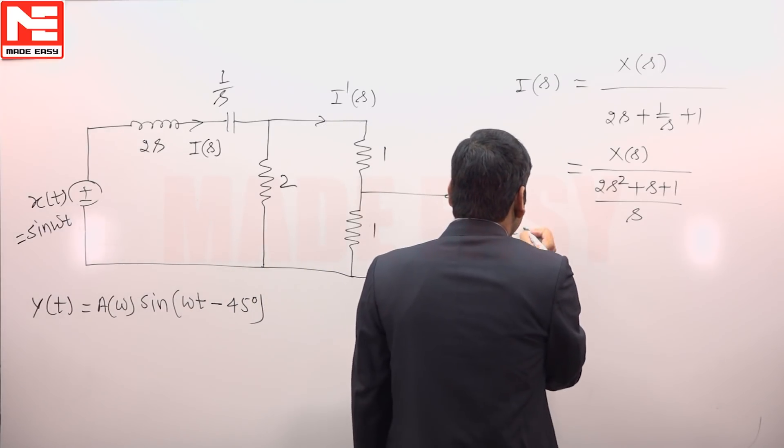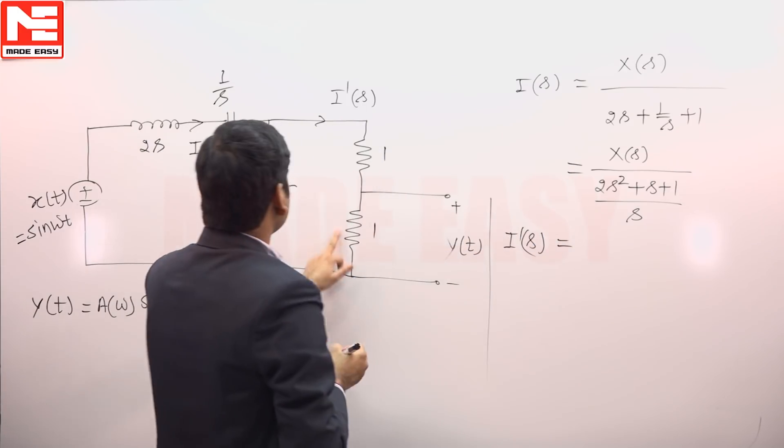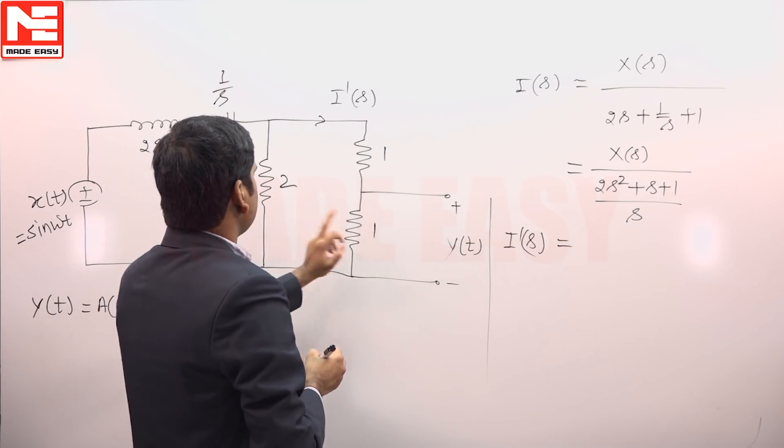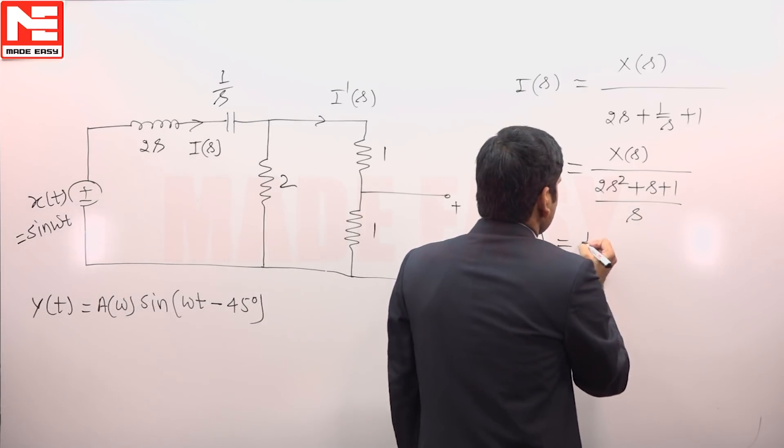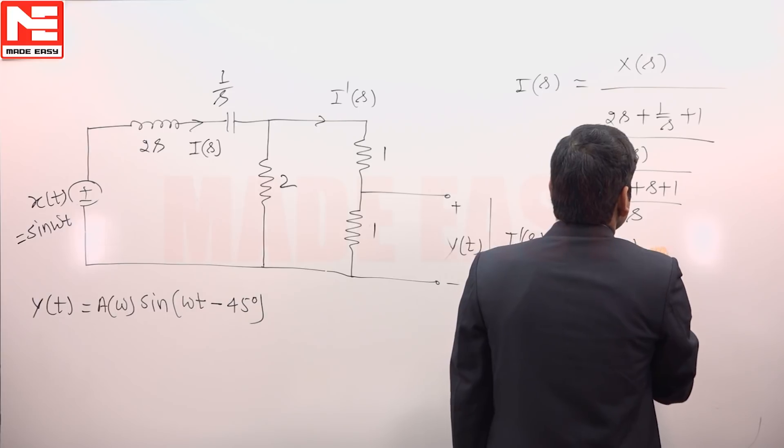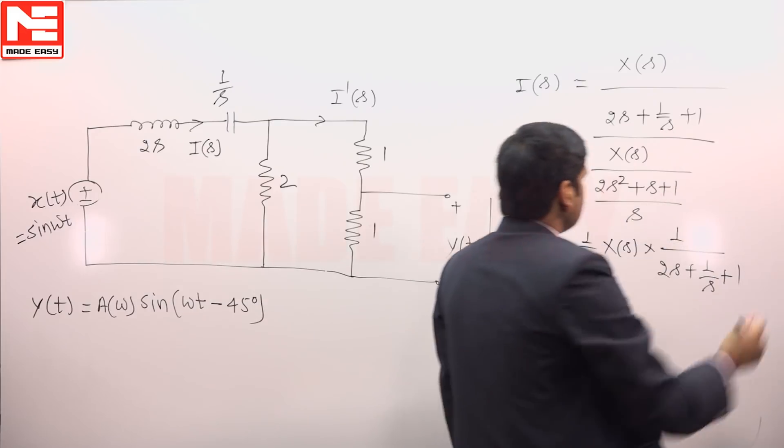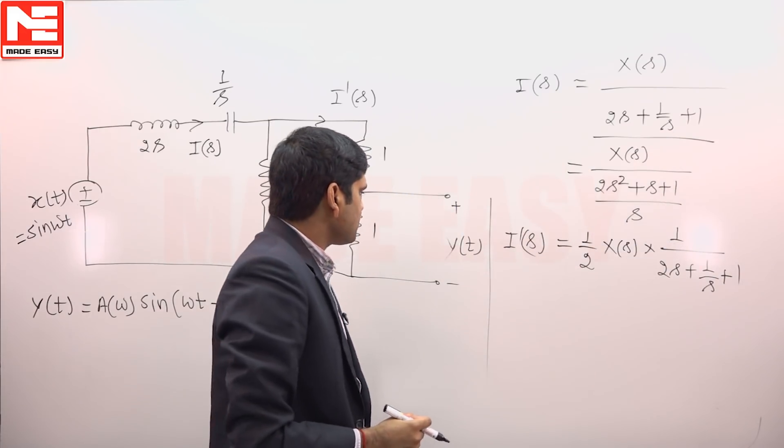To calculate i'(s), this current will equally be divided in these 2 resistances. So 1/2, x(s) × 1/(2s + 1/s + 1), this is simplified i'(s).